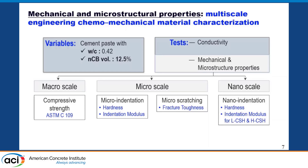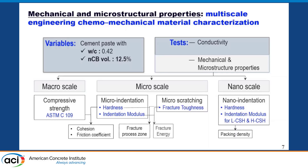Through mechanical and microstructural analysis, we moved across scales: at the macro scale we measured compressive strength; at the micro scale, hardness and indentation modulus using micro-indentation, and micro fracture toughness using micro-scratching; at the nano scale, hardness and indentation modulus of low-density and high-density C-S-H using nano-indentation. By linking scales, we estimated cohesion and friction coefficient from hardness and macro mechanical data, fracture energy from fracture toughness and indentation modulus, and packing density of C-S-H using micromechanics models.